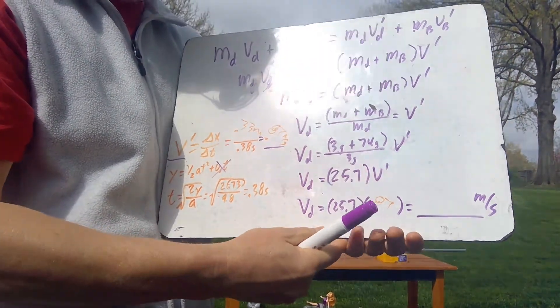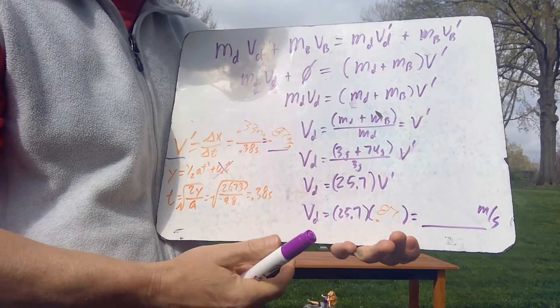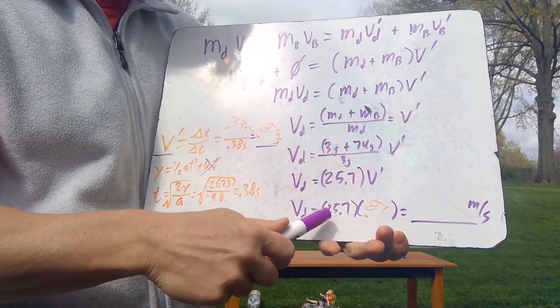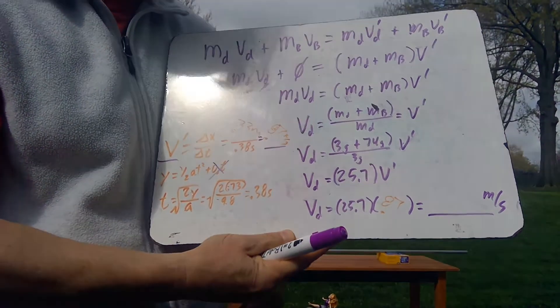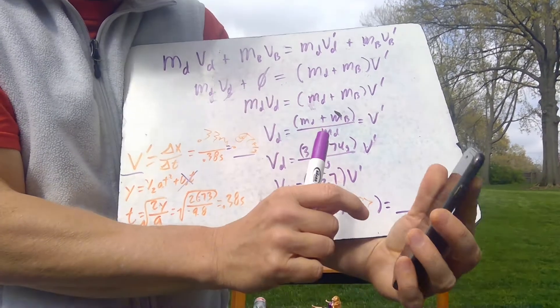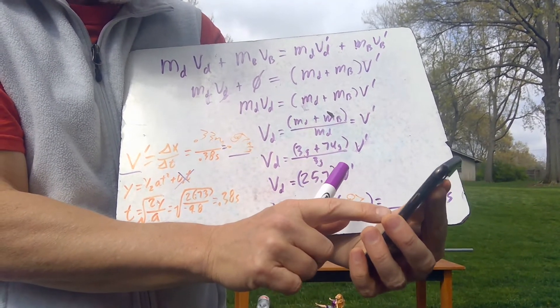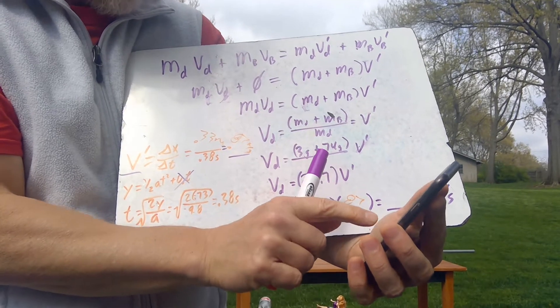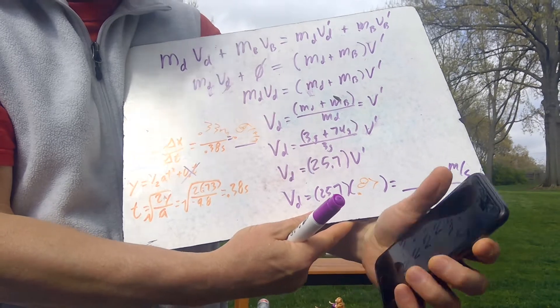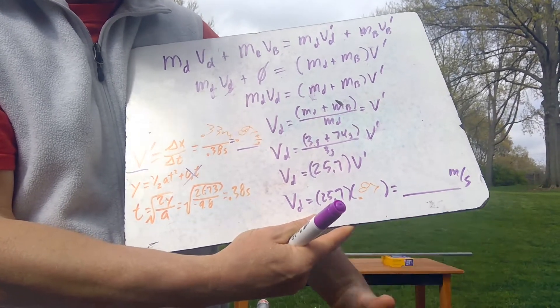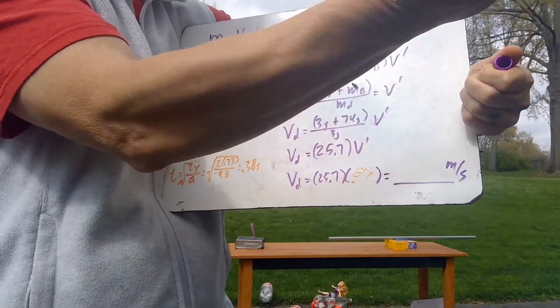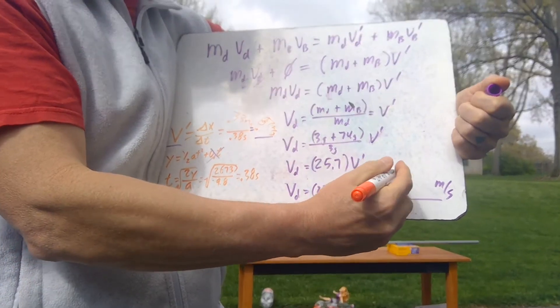Now, the dart being 25.7 times more massive than the whole system together, it's going to be going 25.7 times faster than that 0.87. So the final velocity of that dart is, hold on to your shorts, times 25.7, drum rolling, 22 meters per second. Woo! That's like 45 miles per hour, and she's eight years old. That ain't bad. 45 mile per hour dart.